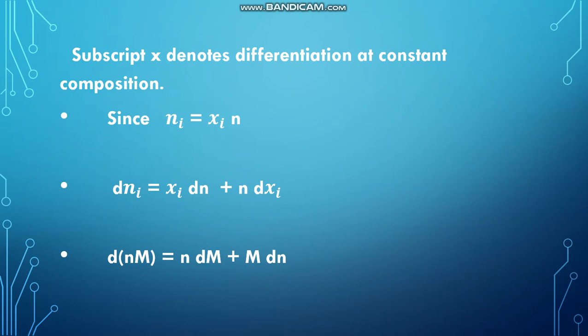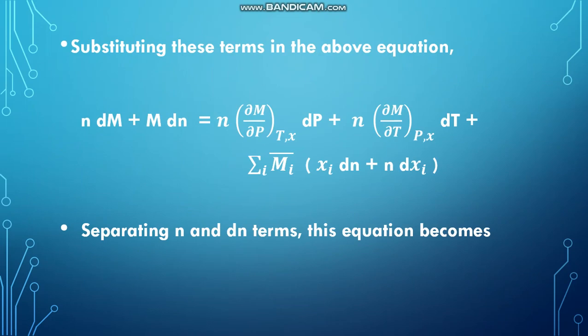Here subscript X denotes differentiation at constant composition. Since Ni is equal to Xi into N, making the differentiation gives dNi equal to Xi into dN plus N into dXi. Similarly, we can write D of Nm equal to N into dM plus M into dN. Substituting these terms in the above equation and expanding gives N dM plus M dN equal to N dou M by dou P at constant T,X into dP, plus N dou M by dou T at constant P,X into dT, plus sigma I of Mi bar into (Xi dN plus N dXi).